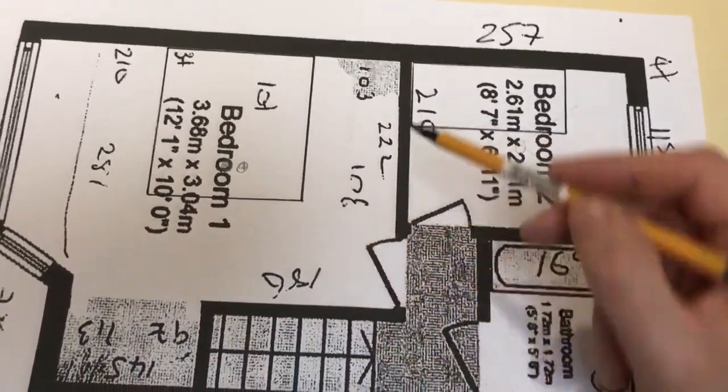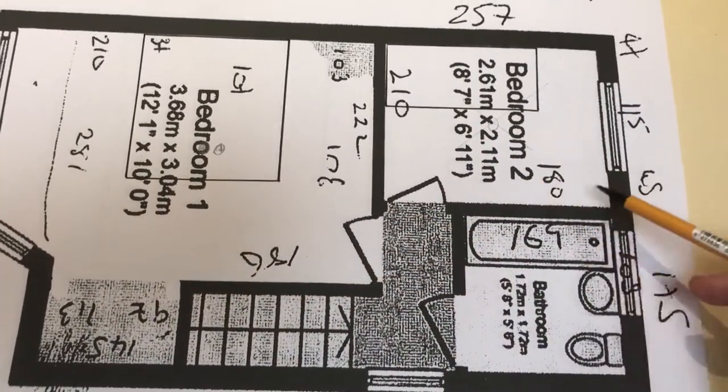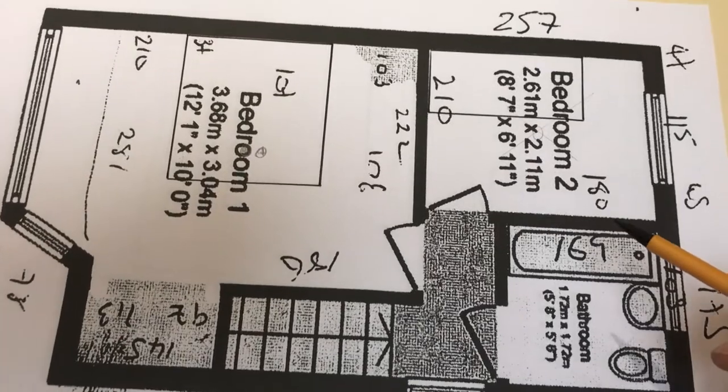So again we've put the beds on, we've got a presumed wardrobe that might be here, it might be here, it might be a wardrobe here. So where do we put the lights?